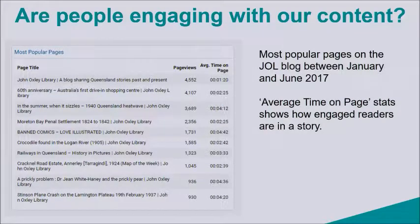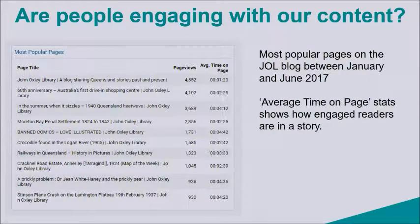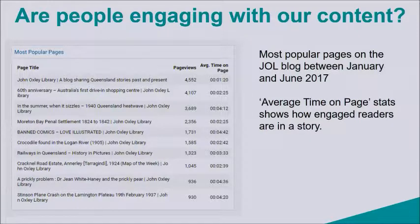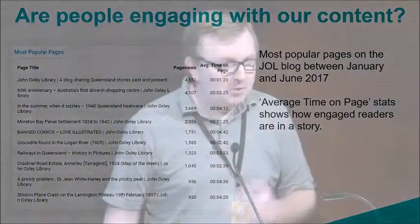The main thing is, are people actually engaging with our content? This is another example from Google Analytics showing you between January and June of 2017 — the number of page views and the most popular stories on the John Otsu Library blog. But more importantly, if you have a look on the right-hand side, there's the average time on page. That shows you how engaged the audience is with the blog, and that's often a very good indicator of a good blog story — is it engaging the audience.